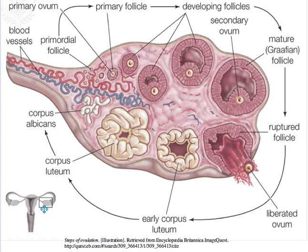These hormones travel via the bloodstream to the ovary, where FSH stimulates the development of several primordial follicles as they become primary follicles. These primordial follicles are present at birth, but with the onset of sexual maturity FSH is produced and some begin to develop. Ultimately, just one of these follicles develops further.